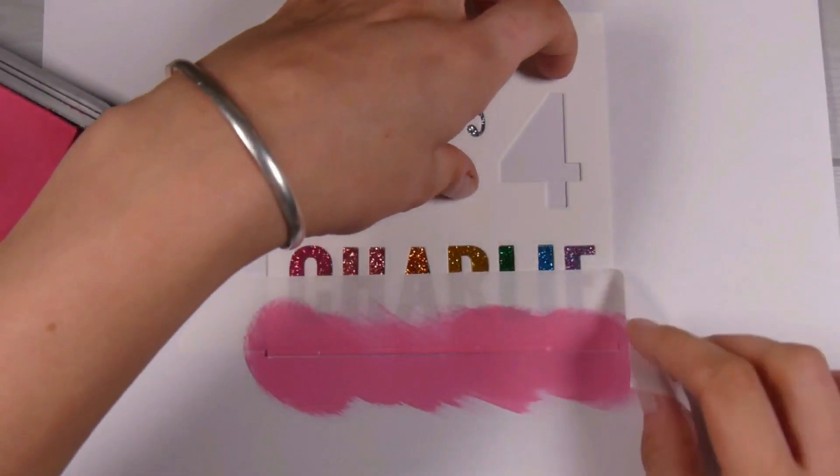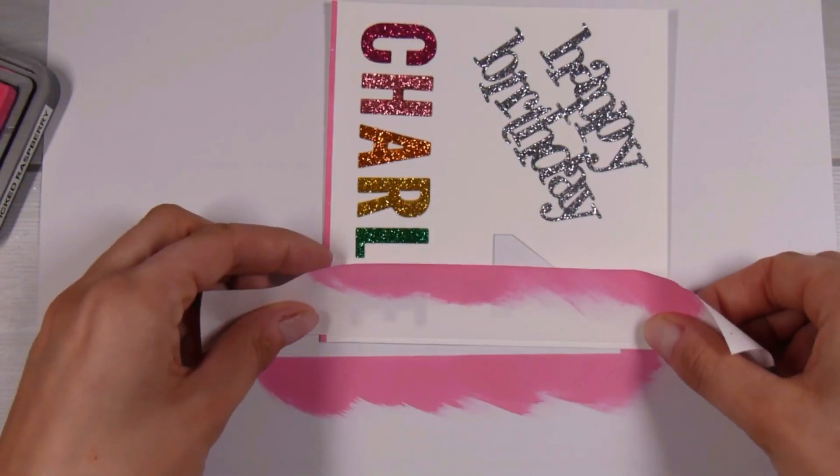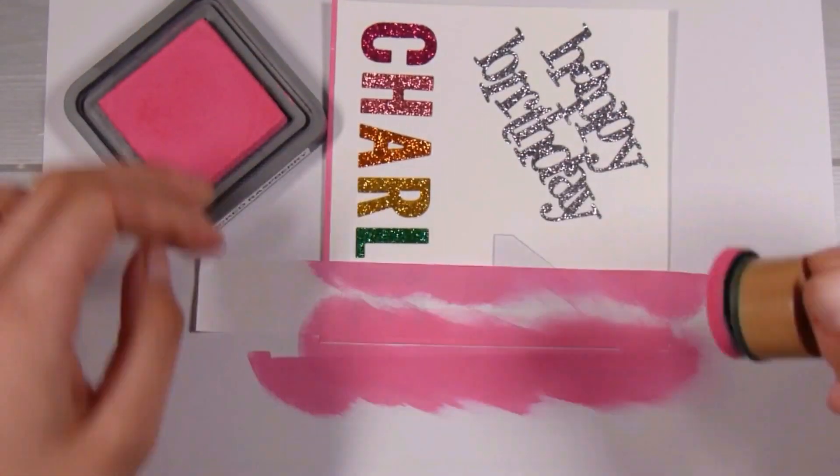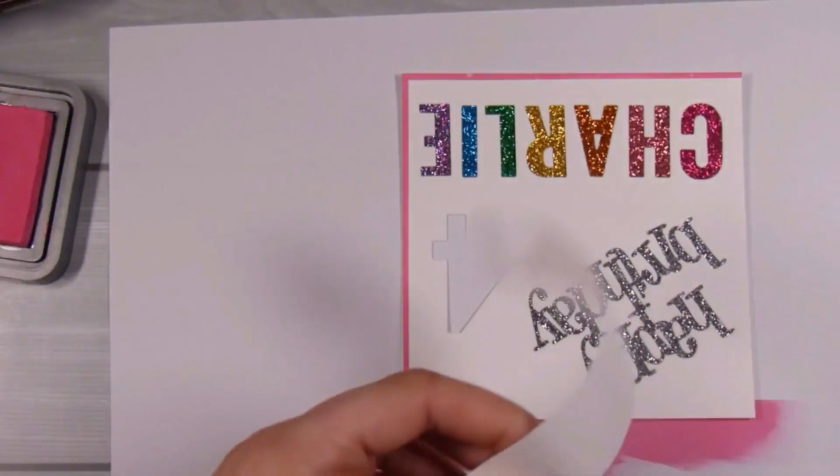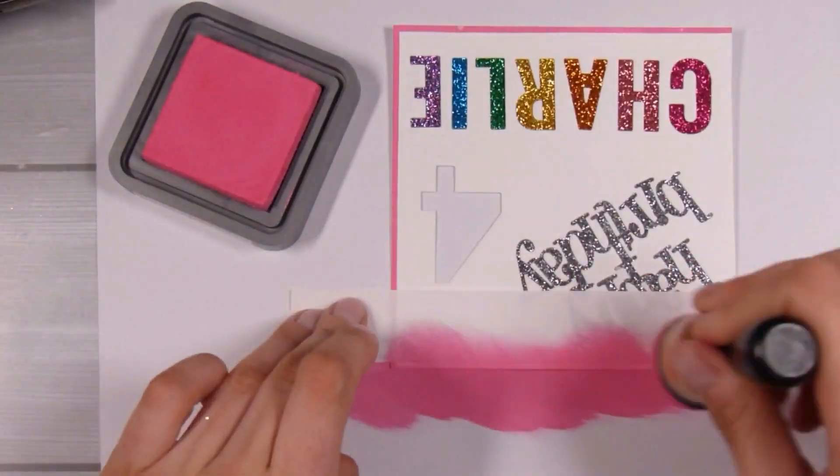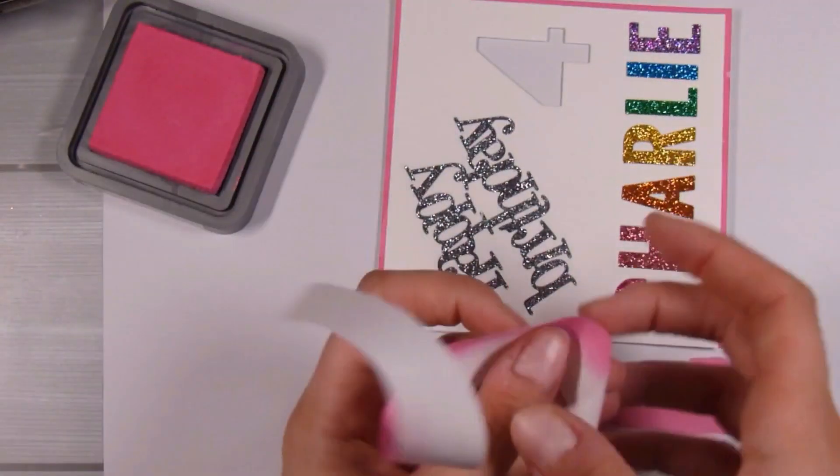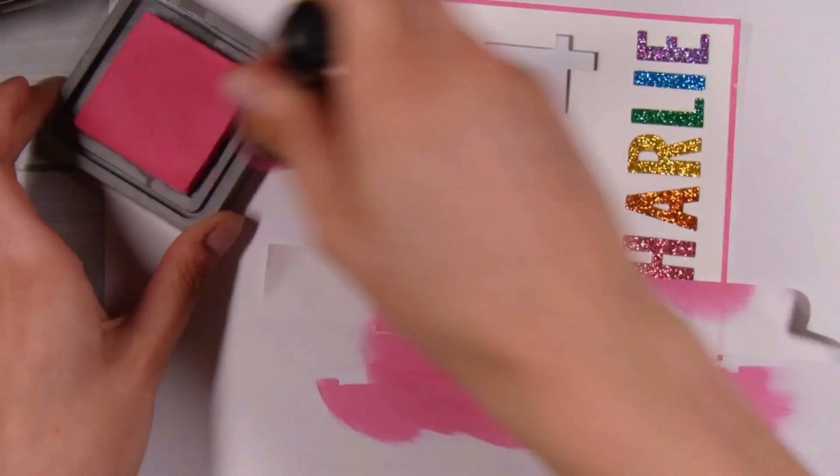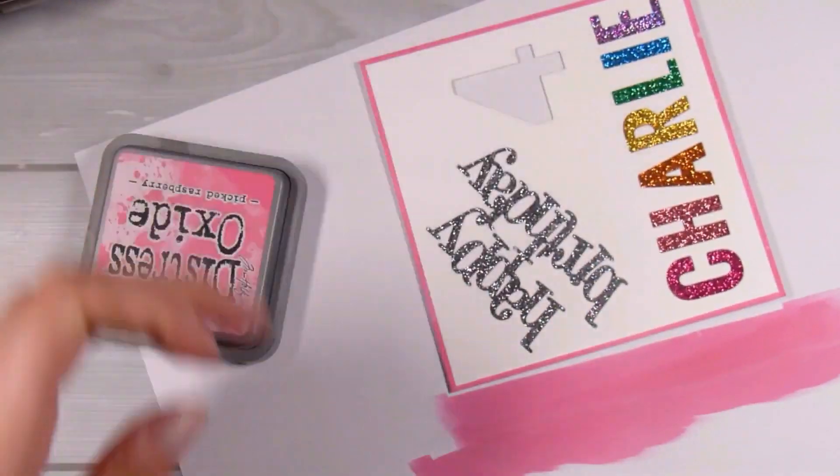Now what I'm going to do is I'm taking some Worn Lipstick Distress Oxide ink, and I am just creating a little border for the card. So I'm using some low-tack tape just to section off that tiny wee strip around the outside. This just adds a little finishing touch to the outside of the card instead of me having to use a mat layer behind it. I'm just putting it around all four sides of the card. Obviously Charlie in this case is a little girl, so that's why I have chosen pink for the outside, and I definitely think that finishes it nicely.